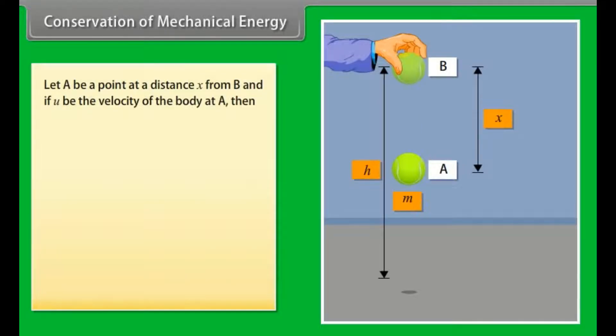Let A be a point at a distance x from B and if u be the velocity of the body at A, then u² = 2gx. Mechanical energy of the body at A = kinetic energy at A + potential energy at A. By calculating it we get the mechanical energy of the body at A is mgh.